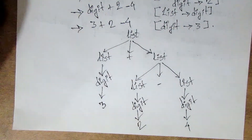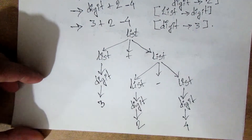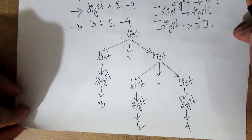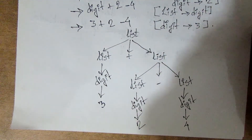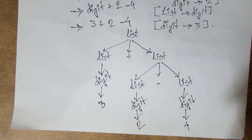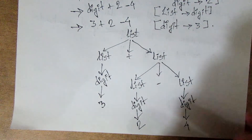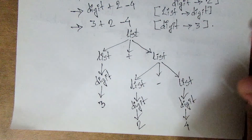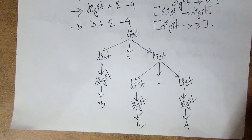So we have completed the rightmost derivation and the leftmost derivation. In the next lecture, we have ambiguity. So the leftmost derivation and the rightmost derivation — we have ambiguity. It's very important.